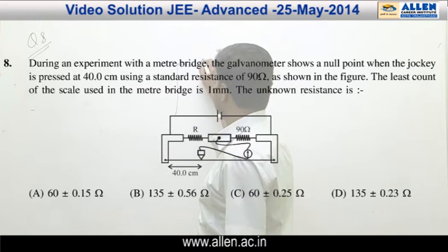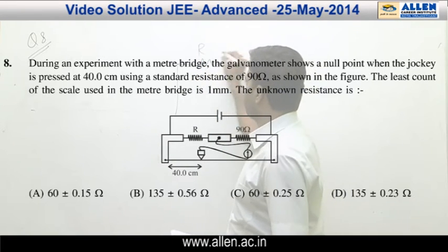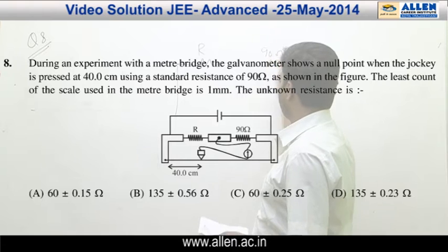So here you have a meter bridge standard apparatus which you have this unknown resistance R, the other being 90 ohms.